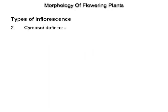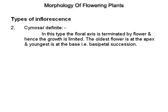Cymose or definite inflorescence. In this type, the floral axis is terminated by a flower and hence growth is limited. The oldest flower is at the apex and the youngest is at the base, i.e. basipetal succession. Examples: Jasmine and Hibiscus.